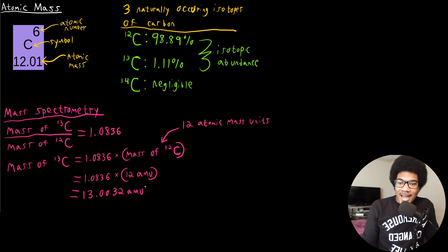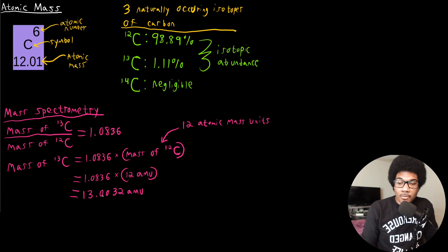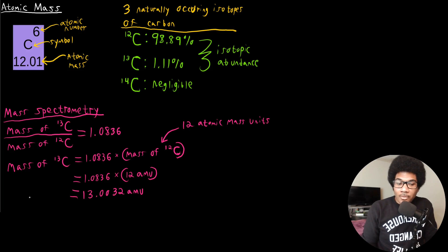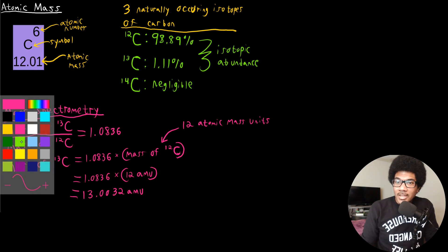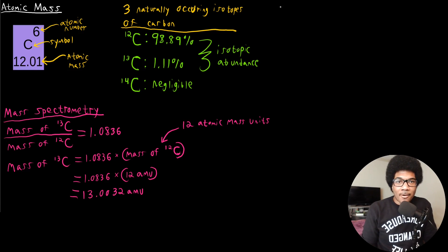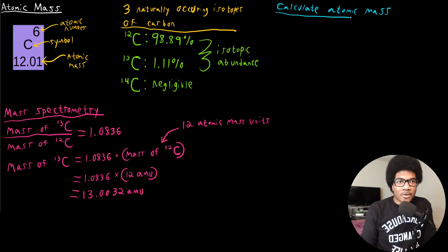Carbon-13 is close to 13, but not exactly 13. In fact, carbon-12 is really the only isotope that will be a whole number. Every other isotope's mass is going to be some sort of decimal close to the superscript number. Since the mass of carbon-14 is negligible, it won't really have to factor into our calculation.